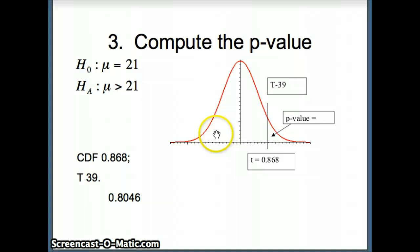0.8046 corresponds to all of this area. We can use that to find the p-value. The entire area has to be one, so if this is 0.8046, the p-value is 1 minus 0.8046, or 0.1954.